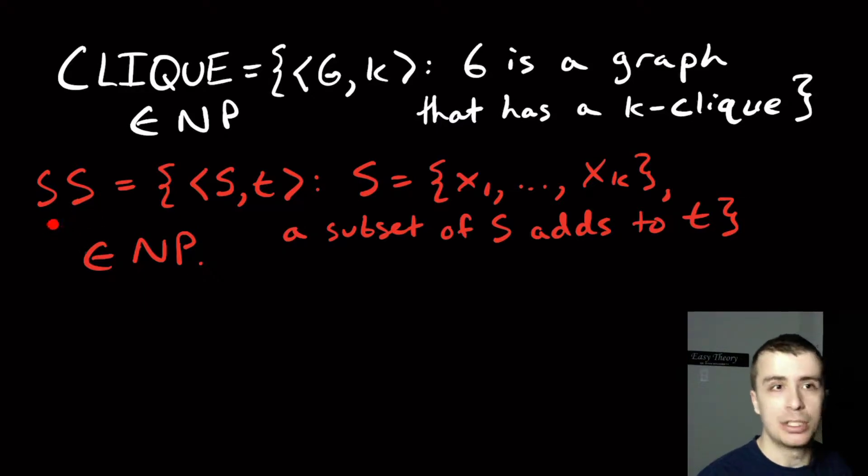And this other one is SS, short for subset sum, which is useful for a lot of numerical type applications. And what it is is a pairing of a set of integers with another integer t. So S here is just a set of integers, it doesn't matter how many there are. And the question we're asking is: is there a subset of that set S that adds up to t?